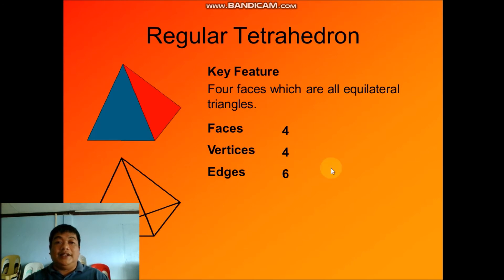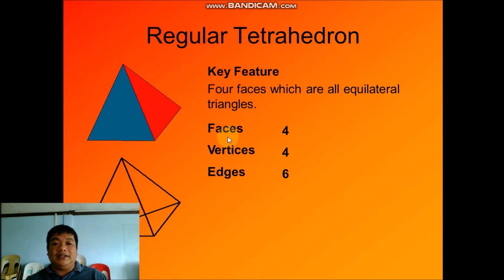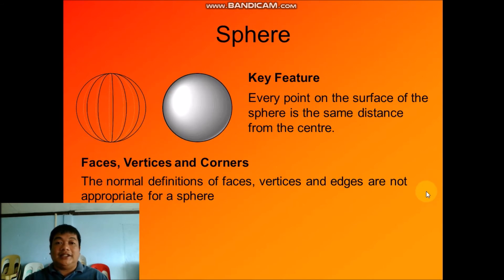Next we have the regular tetrahedron, also called a pyramid. A tetrahedron has four faces which are equilateral triangles. How many faces? One, two, three, and four. It has four vertices and six edges.